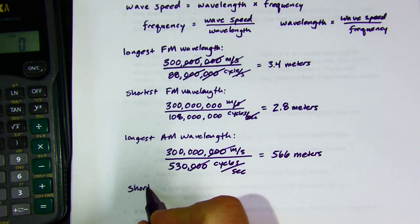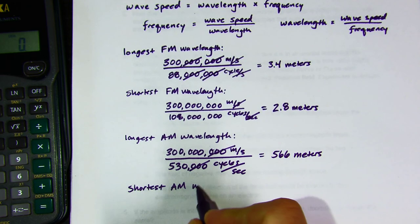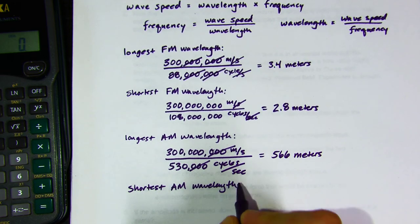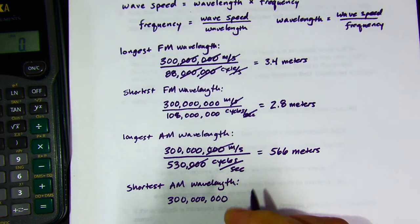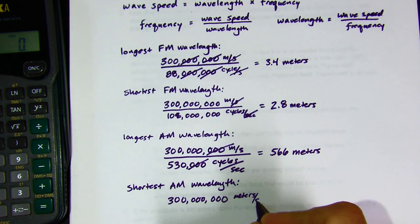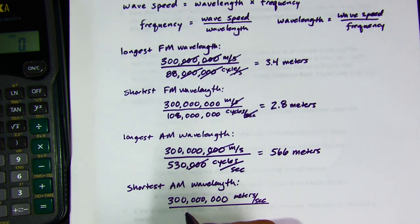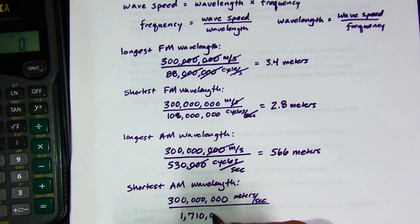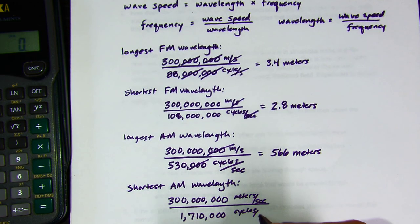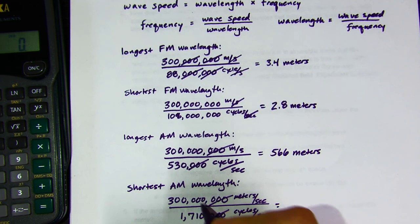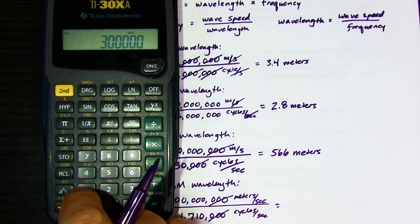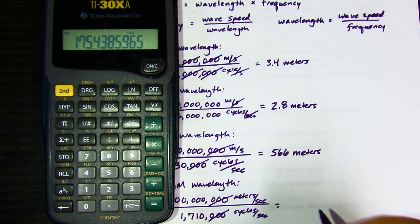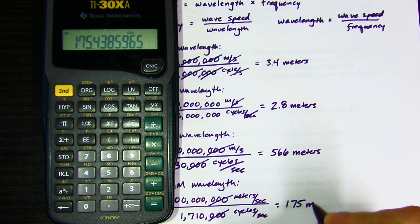The shortest AM wavelength would then use the same speed — 300,000,000 meters per second — divided by 1710 kilohertz, which is 1,710,000 cycles per second. That works out to be 175 meters.